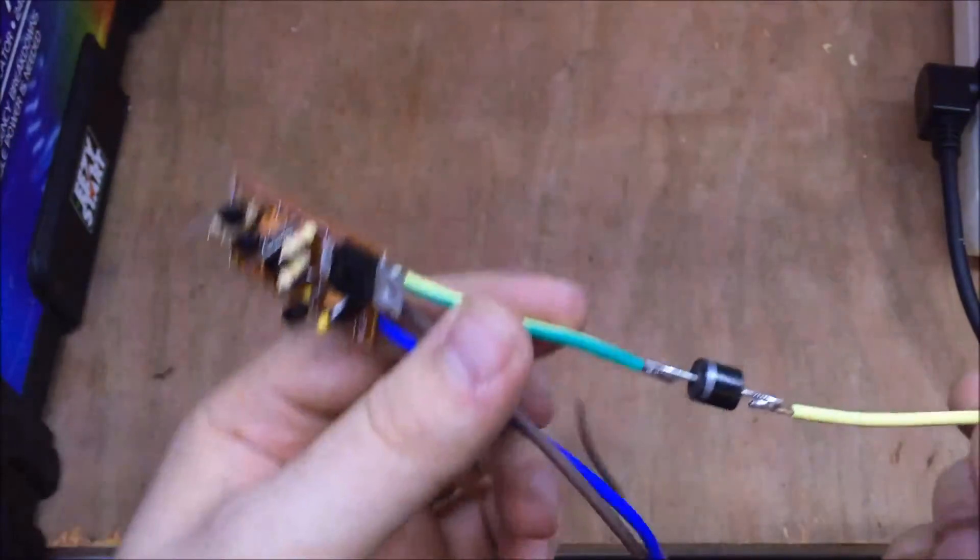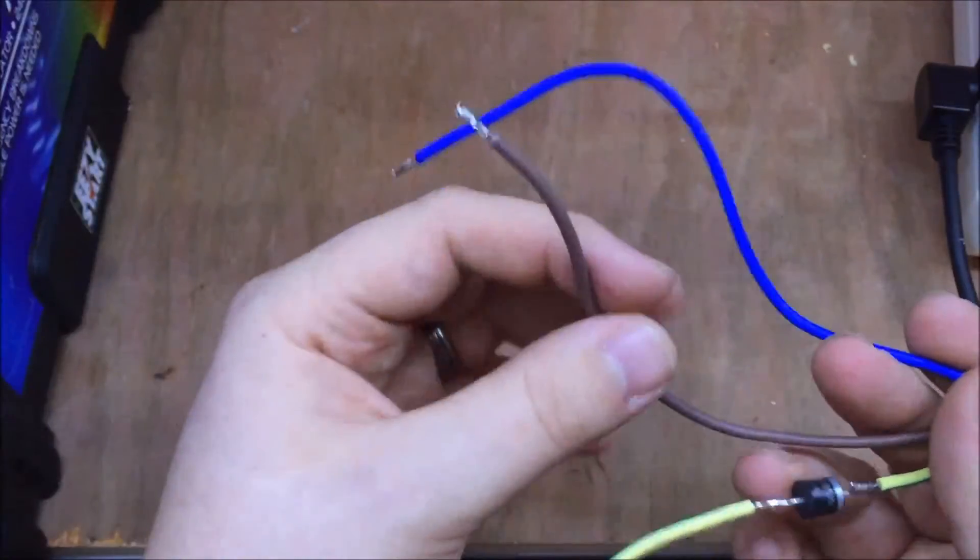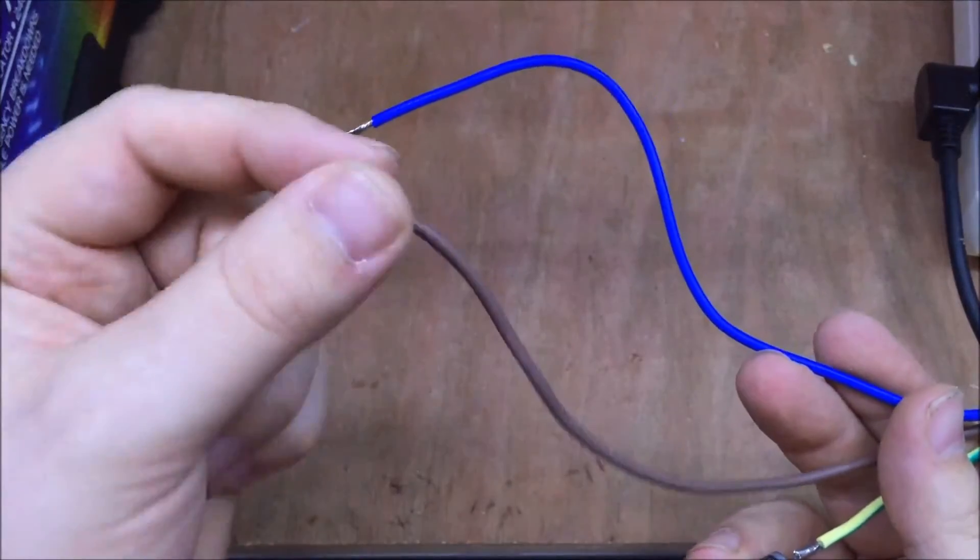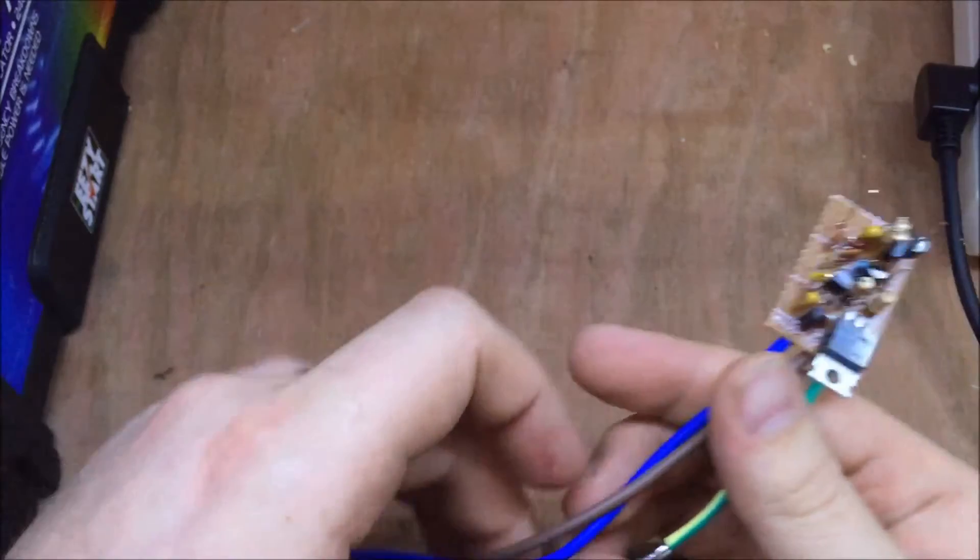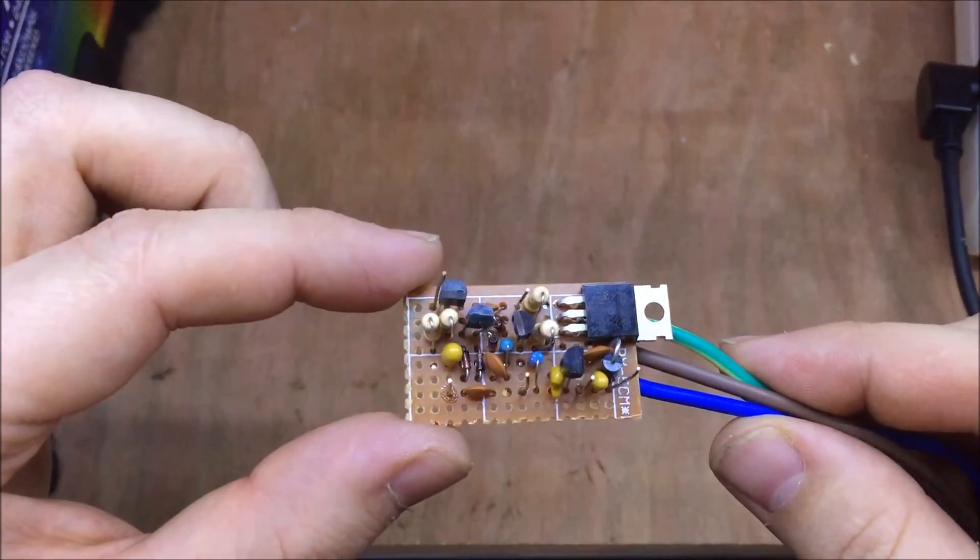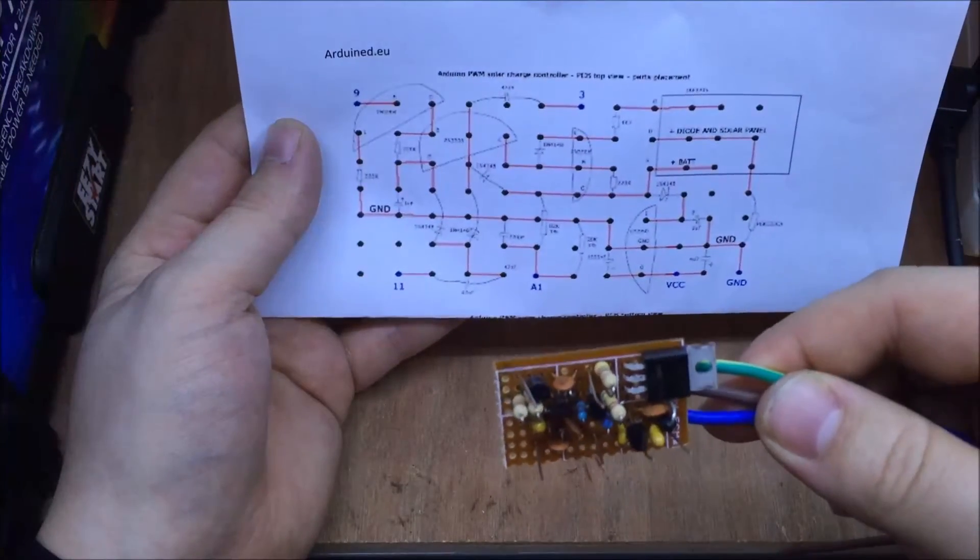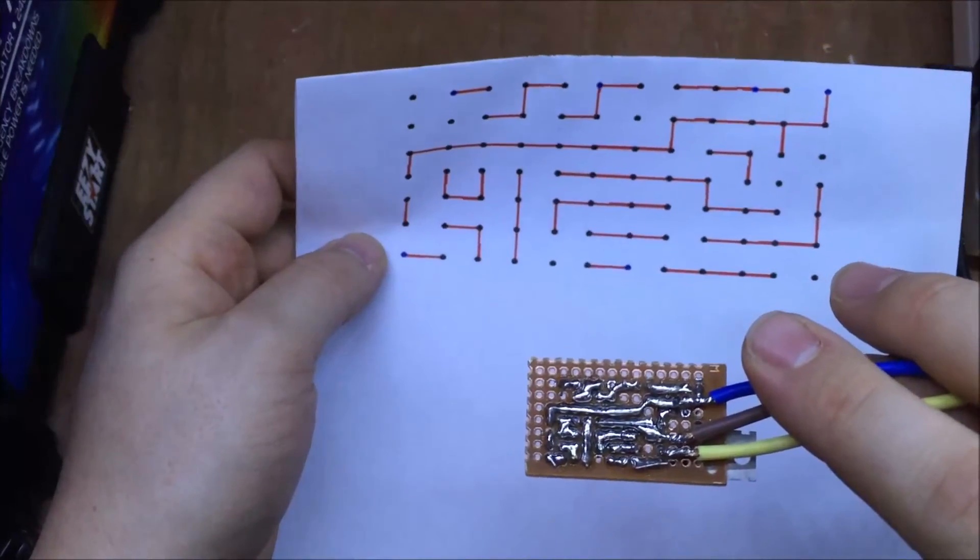We've got the solar coming in via a Schottky diode, and the positive battery connection, and the negative to both battery and solar panel. There we are, there's the top. In fact, I'll put this in the background. There's the top, and there's the bottom.